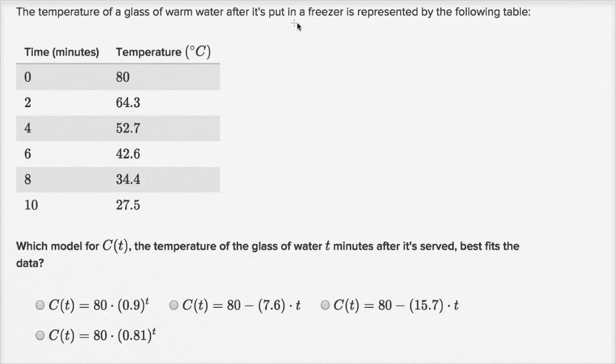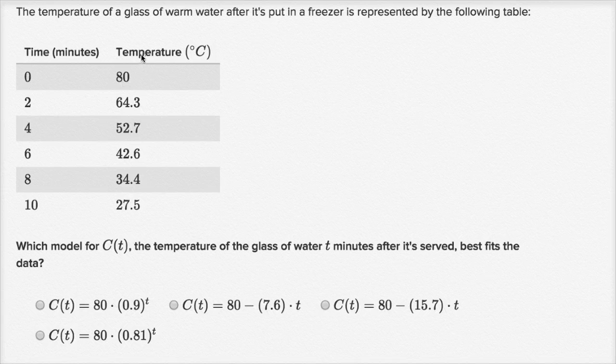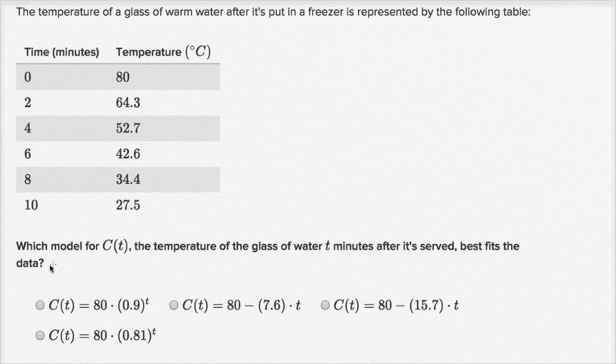The temperature of a glass of warm water after it's put in a freezer is represented by the following table. So we have time in minutes, and then we have the corresponding temperature at different times in minutes. Which model for C of T, the temperature of the glass of water T minutes after it's served, best fits the data?